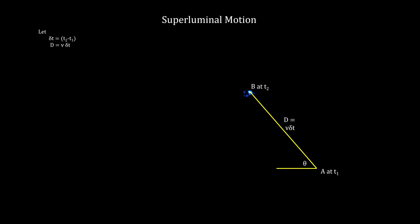We're observing this motion from a great distance at an angle theta from the object's line of motion. We see only the proper or transverse motion across the sky, designated here as d prime.